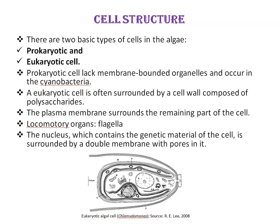The eukaryotic cell is often surrounded by a cell wall. You can see here, this is a eukaryotic algal cell, and this is a cell structure of Chlamydomonas. The eukaryotic cell is surrounded by a cell wall composed of polysaccharides that are partially produced and secreted by the Golgi body. Then, the plasma membrane surrounds the remaining part of the cell. This membrane is a living structure, responsible for controlling the influx and the outflow of substances in the protoplasm.